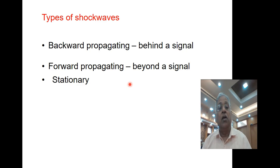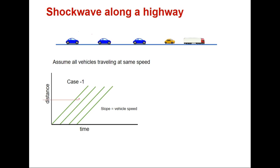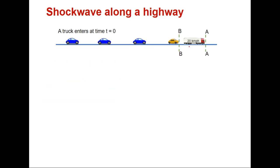Let me go to the board to explain the shockwave along a highway. Consider a highway where all vehicles are moving at a speed of 60 km/h, and the trajectory of all these vehicles is shown where the slope of each line is 60. A truck moving at a speed of 20 km/h enters the highway at time t₀, and passing is not permitted. Then all vehicles following this truck will be forced to travel at 20 km/h, and slowly a platoon will form behind the truck.